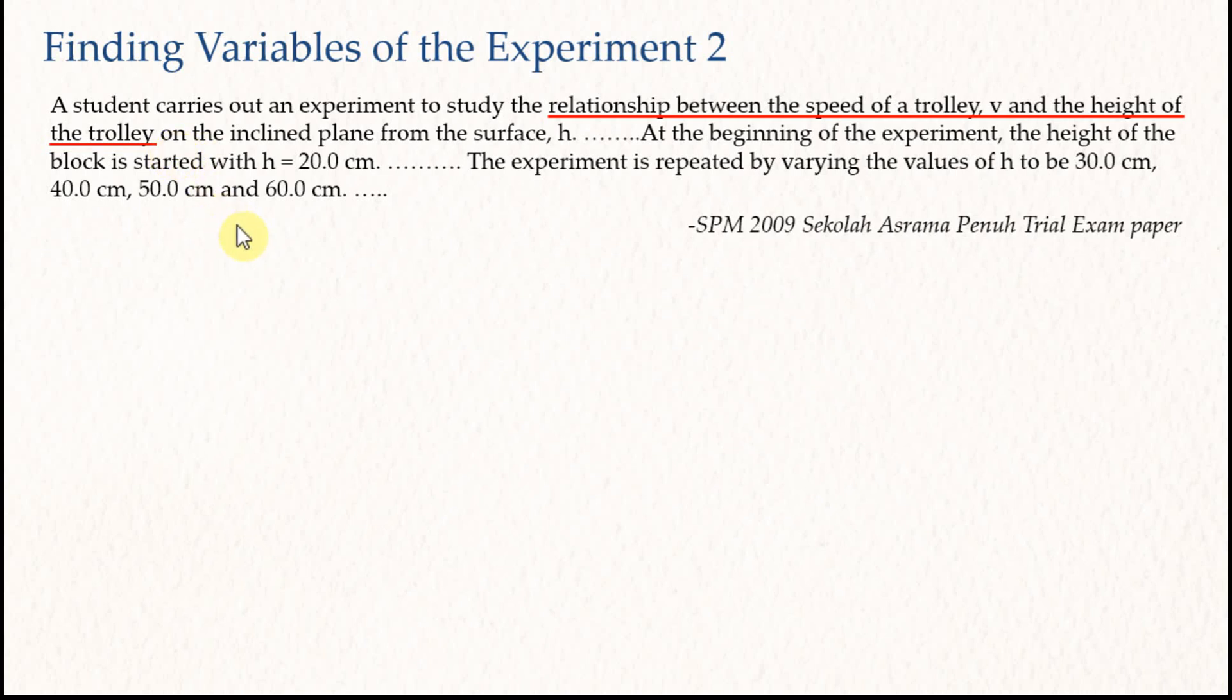Let's have a look at this sentence. The sentence tells us that this is an experiment that studies the relationship between the speed of a trolley v and the height of the trolley. Therefore, from this sentence, we can tell that the two variables are the speed of trolley and the height of the trolley from the surface or from the surface of the inclined plane. Because we study the relationship between these two variables, these two must be the manipulated variable and the responding variable.